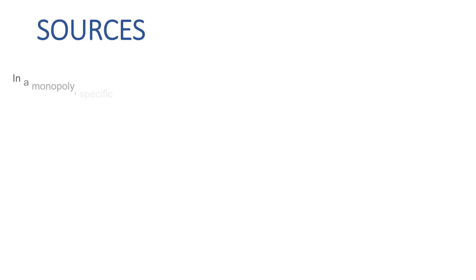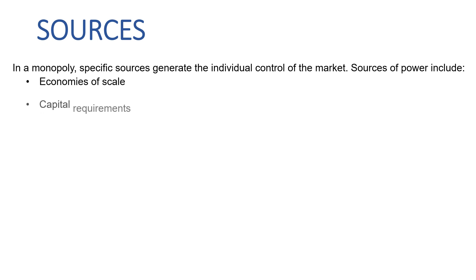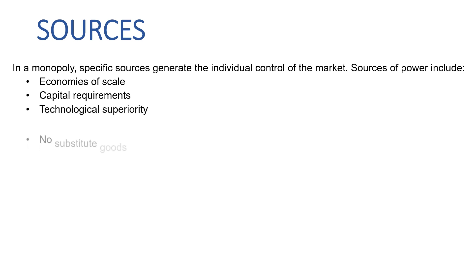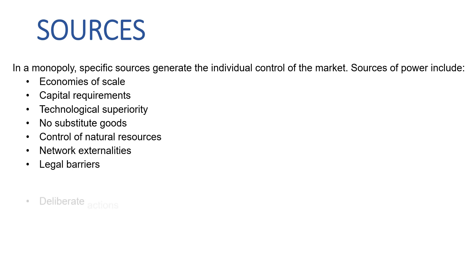In a monopoly, specific sources generate the individual control of the market. Sources of power include: economies of scale, capital requirements, technological superiority, no substitute goods, control of natural resources, network externalities, legal barriers, and deliberate actions.